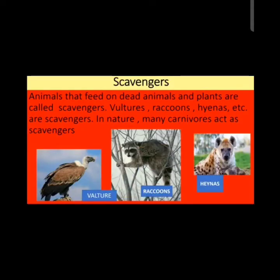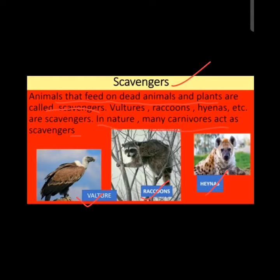Animals that feed on dead animals and plants are called scavengers. Examples include vultures, raccoons, and hyenas. In nature, many carnivores also act as scavengers. Vultures, raccoons, and hyenas are carnivorous animals that behave like scavengers, feeding on dead animals and dead plants.